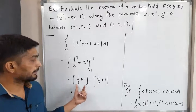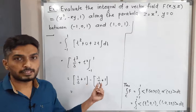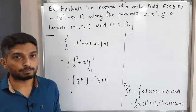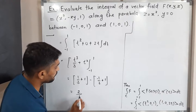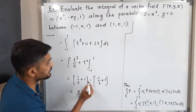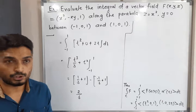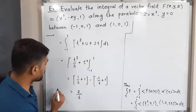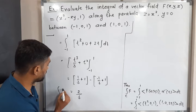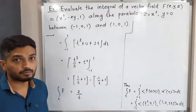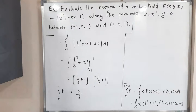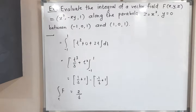We have (1/3 + 1) - (-1/3 + 1) = 1/3 + 1 + 1/3 - 1 = 2/3. The +1 and -1 cancel each other. Therefore the value of the line integral of vector field F over curve C is 2/3.